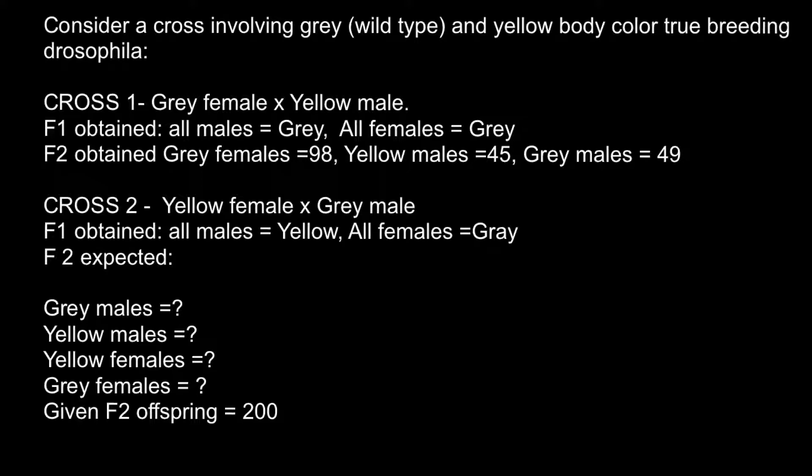In the first cross, we cross a gray female with a yellow male. In the F1 generation we obtained all males that were gray and all females that were gray. In F2 we obtained gray females: 98, yellow males: 45, and gray males: 49.